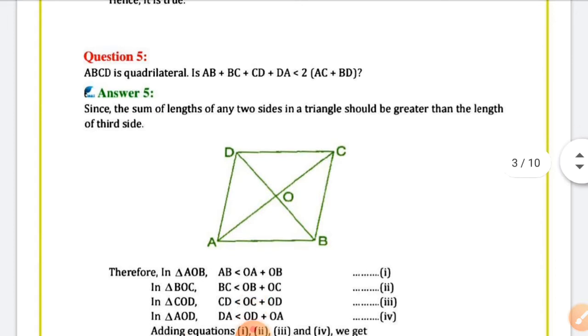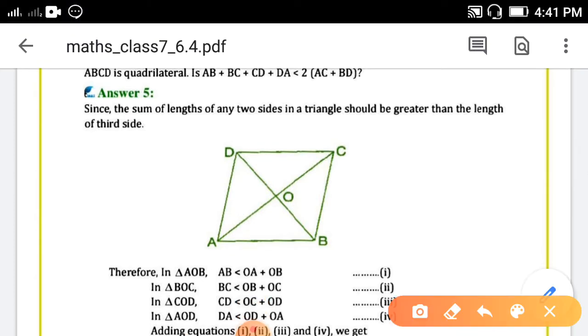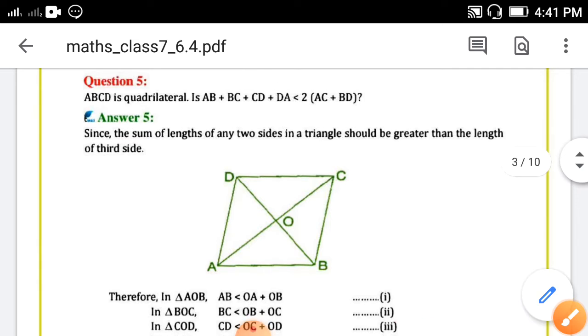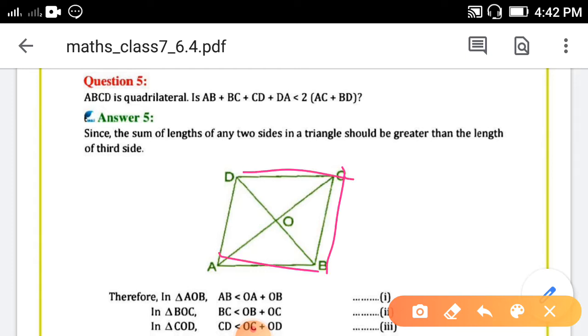What is the question? ABCD is a quadrilateral. Is AB + BC + CD + DA less than two times (AC + BD)? So here ABCD is a quadrilateral. What you have to prove: AB + BC + CD + DA, sum of all four sides, is less than two times AC plus BD.